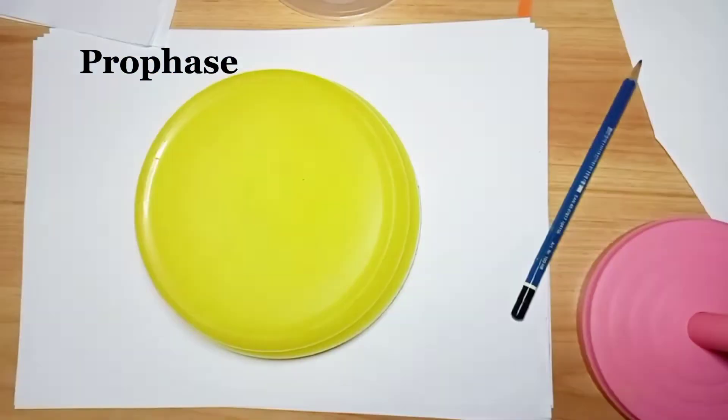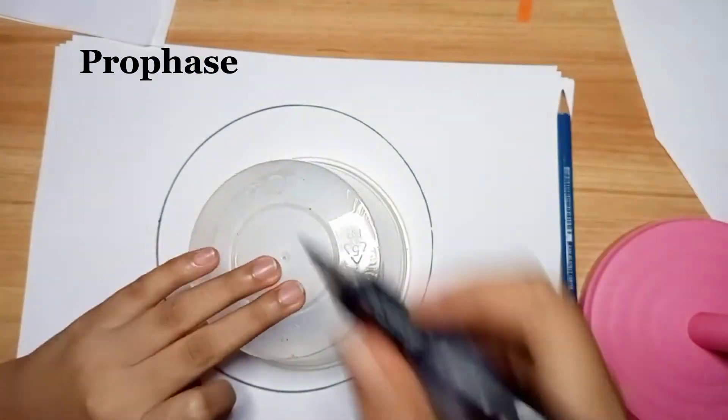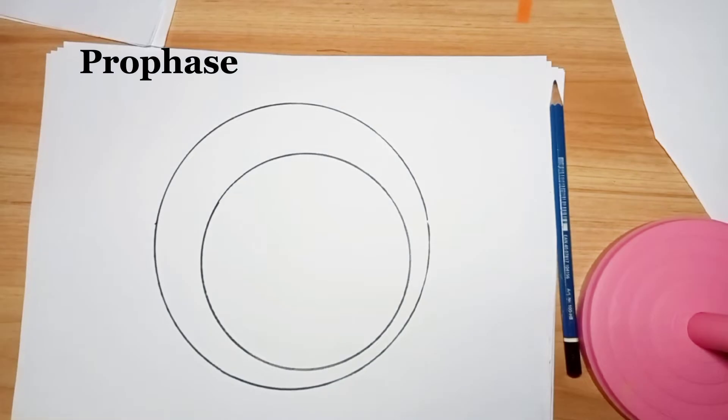Mitosis. Prophase. During prophase, the replicated pairs of chromosomes condense and compact themselves.